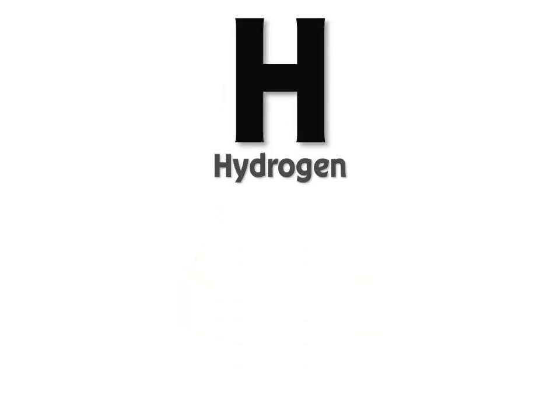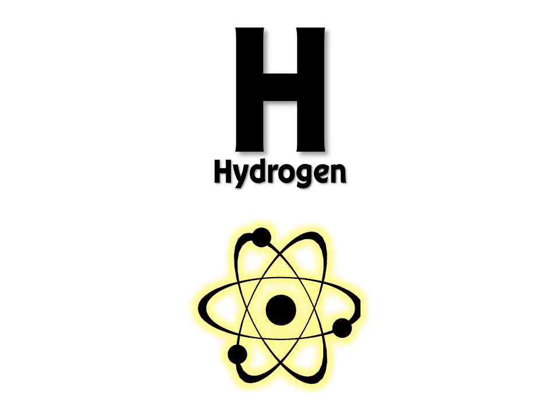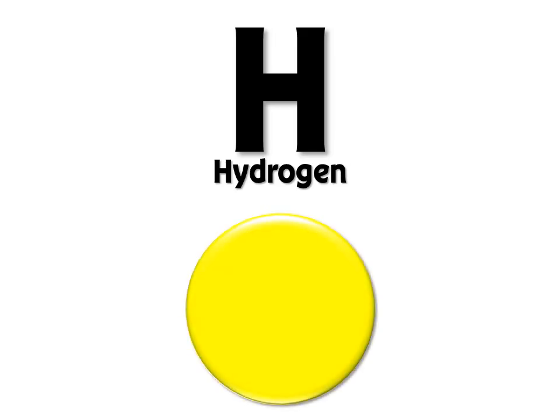Another element found on the periodic table of elements is represented by the letter H. H represents hydrogen. Hydrogen is a different kind of atom. And remember, all the atoms known to man are listed on the periodic table of elements.